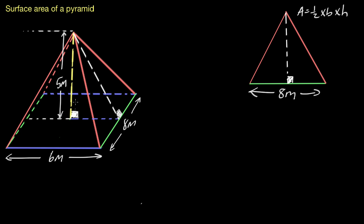We've got a right-angle triangle in there, and we can use Pythagoras to find the length of the hypotenuse. We need two short sides for Pythagoras. Looking at the base, if we bisect the six-meter side, we're cutting six in half, giving us three meters. That's the same length as the dotted blue line in the center of the pyramid, so that's where we get our three-meter length from.